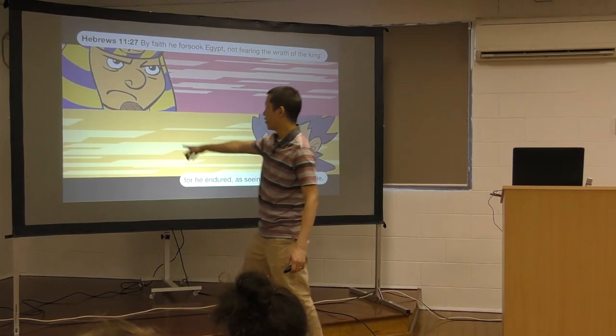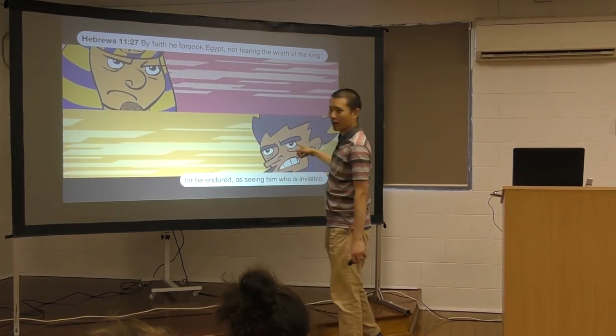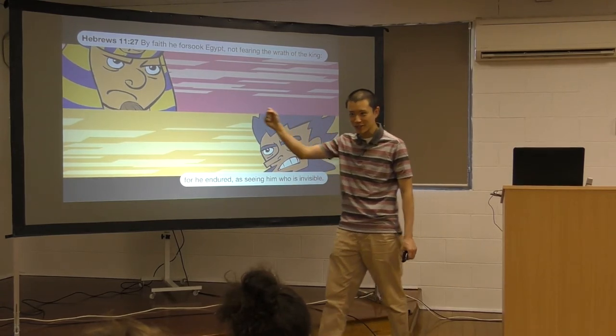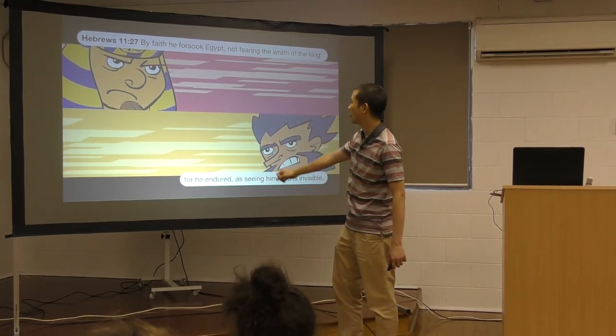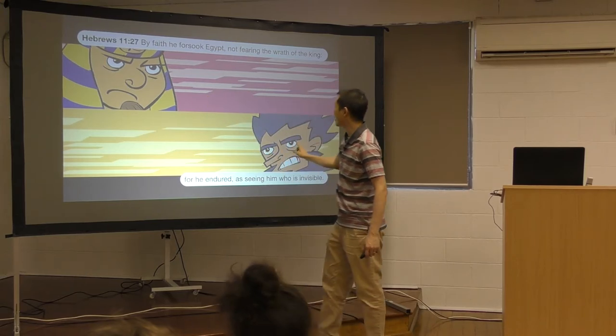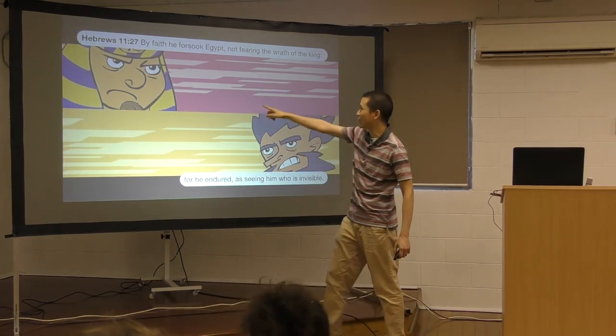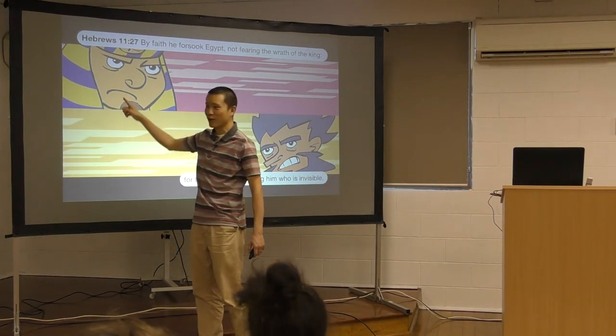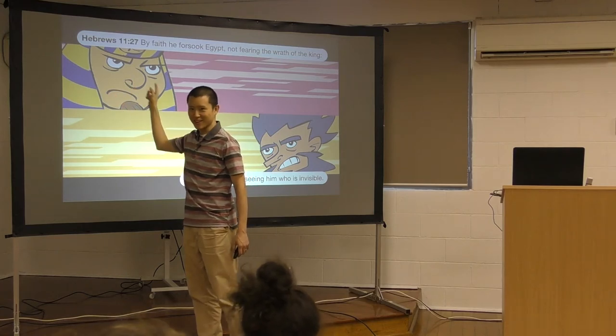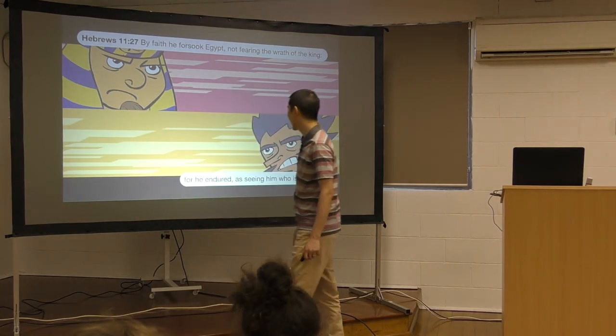And here's Pharaoh. This is when Pharaoh and Moses face off. You remember when God sent Moses to Pharaoh and said, let my people go? By faith he forsook Egypt. That's Moses. Not fearing the wrath of the king. Does he look happy? No, he's angry, right? Because now Moses is going against him.